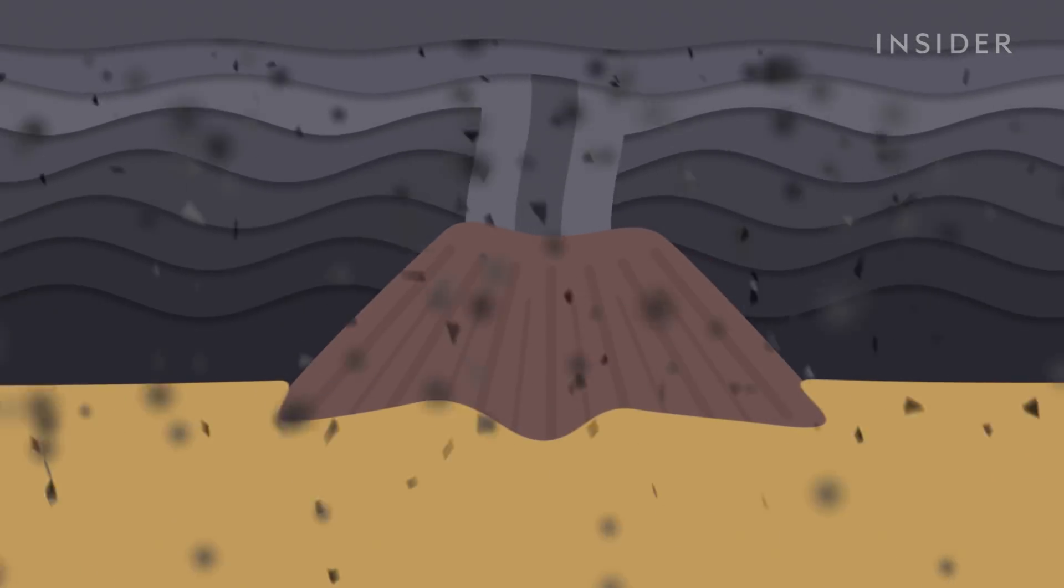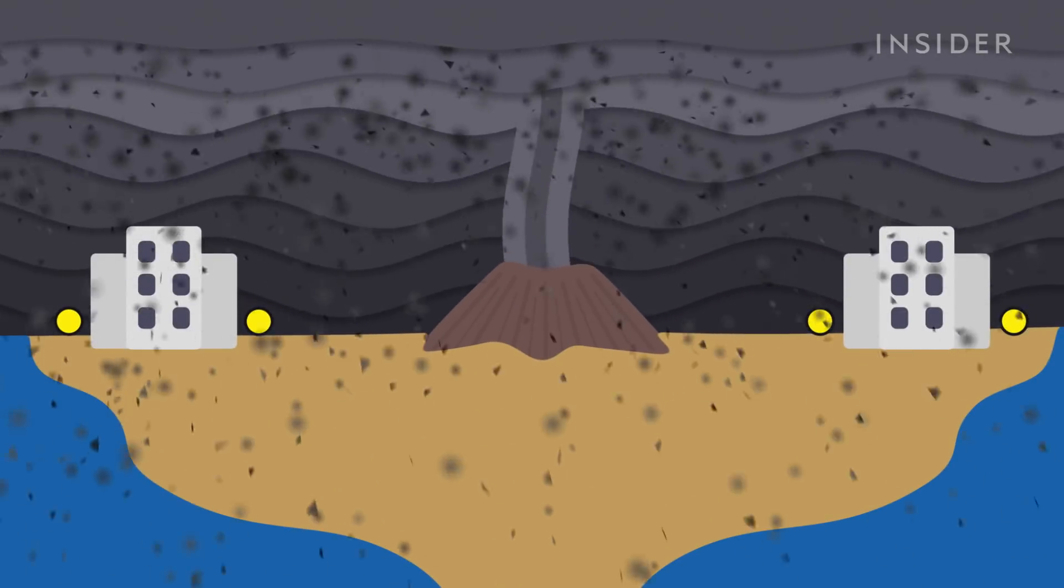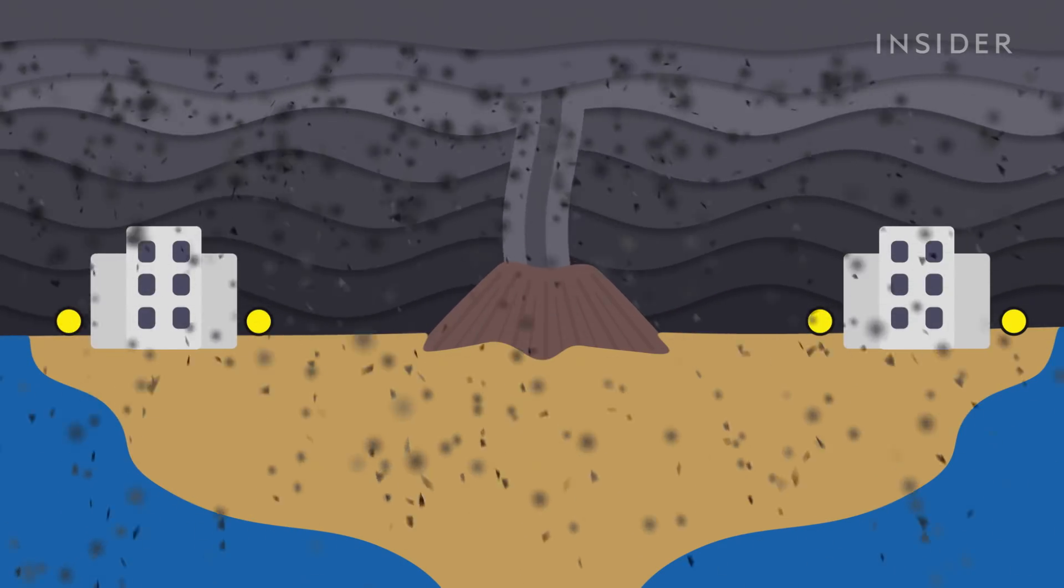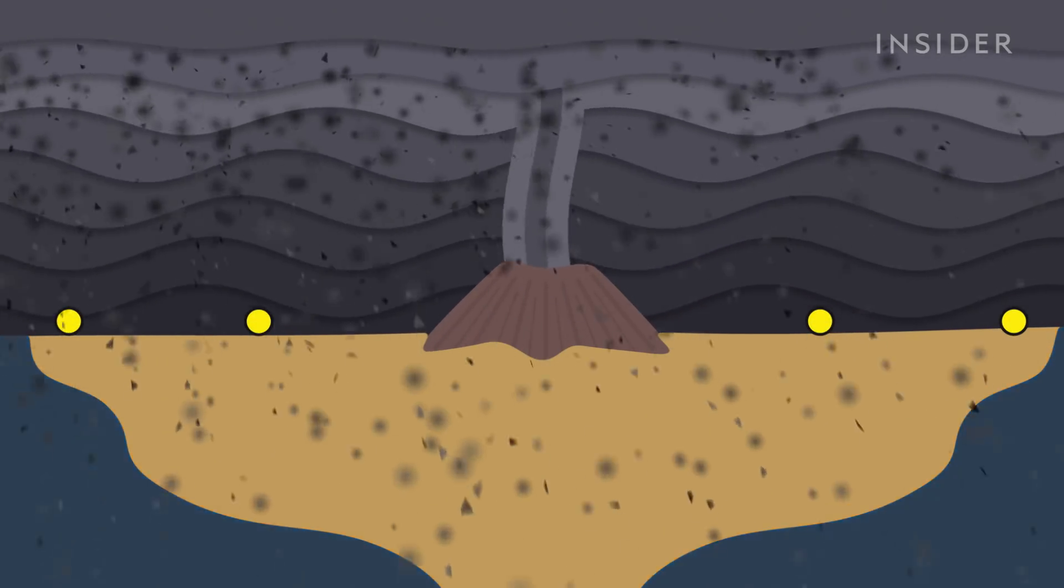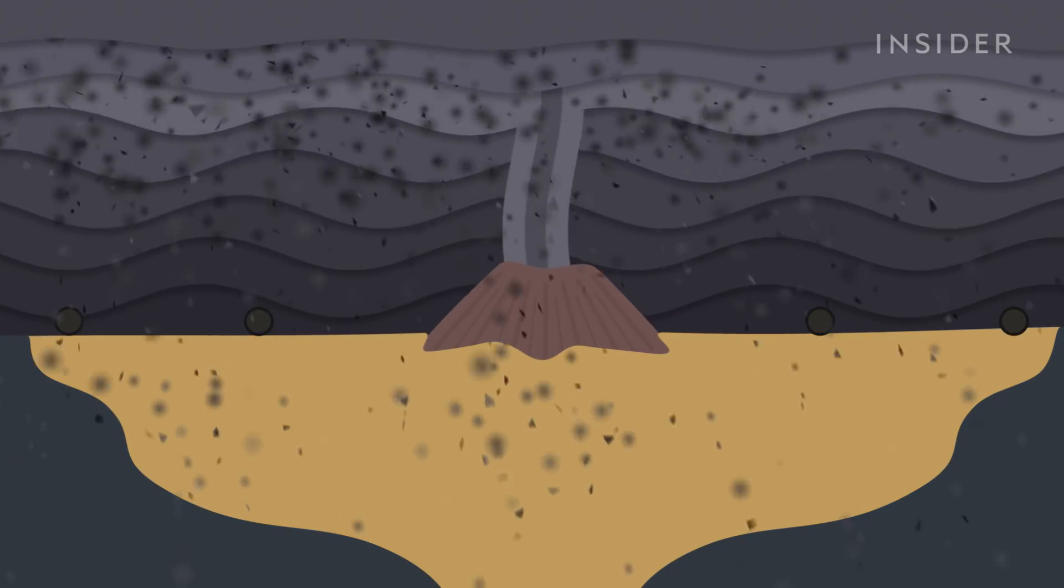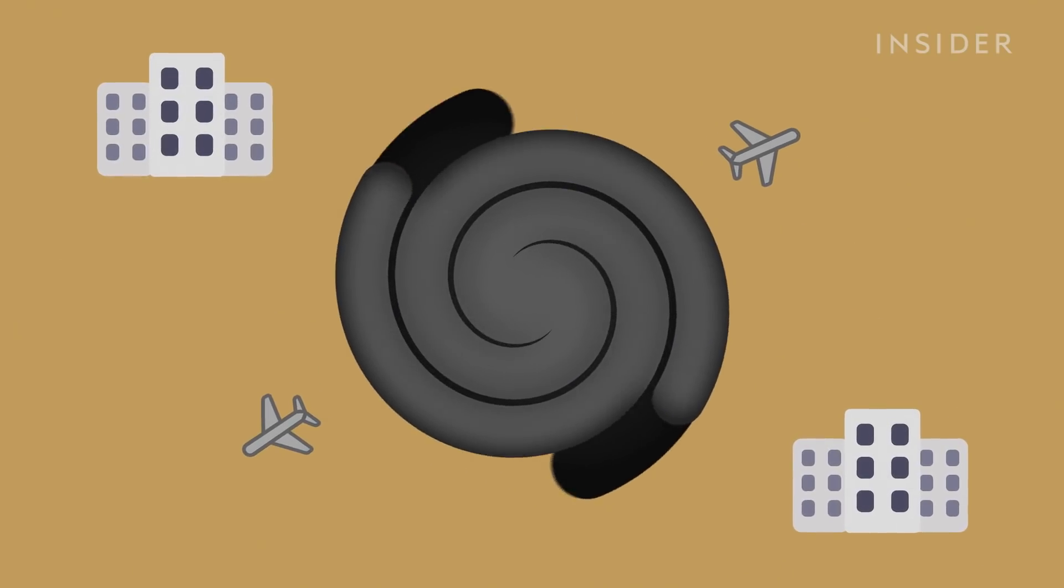Since this cloud of ash doesn't just travel up, it also expands out, crashing across the landscape at jet fighter speeds. It would collapse buildings, contaminate water supplies, and bring down any power grids in its path. And the fallout would extend for hundreds of kilometers.